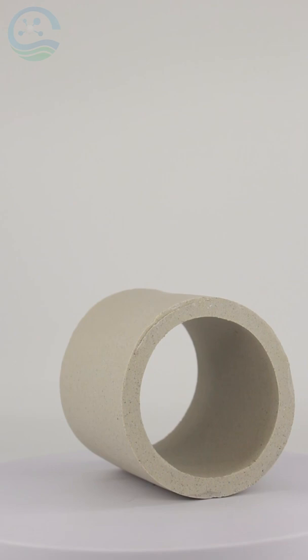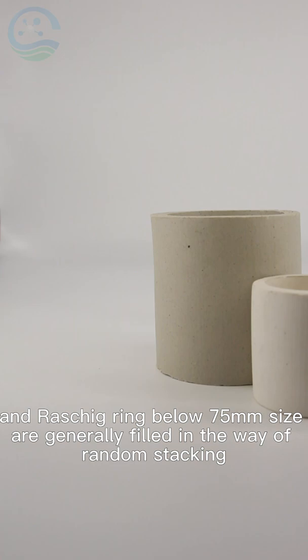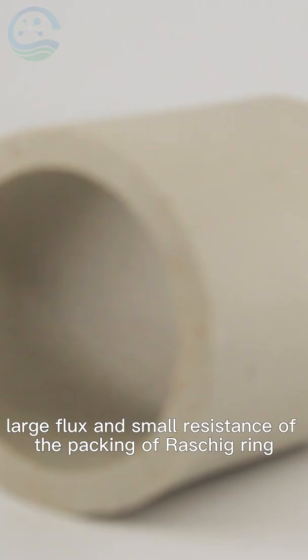Generally, large-sized Raschig rings are regularly filled in the way of whole masonry, and Raschig ring below 75mm size are generally filled in the way of random stacking. Due to the high porosity,